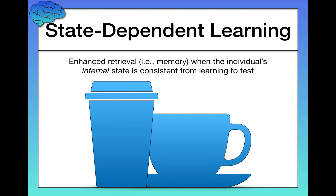State-dependent learning is very similar to context-dependent learning, except instead of the external environment, we're talking about the individual's internal state. Enhanced retrieval occurs when the internal state is consistent from learning to test. For example, if students study without coffee but then drink a lot right before an exam, they've created a mismatch — all their learning happened in a more relaxed state, and that different internal state during the test impairs memory, even though it feels like they're doing something helpful.